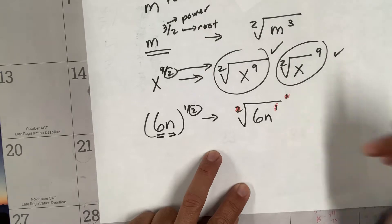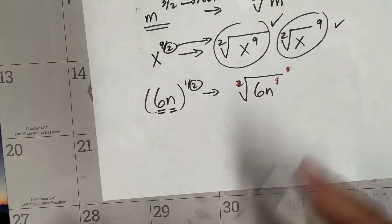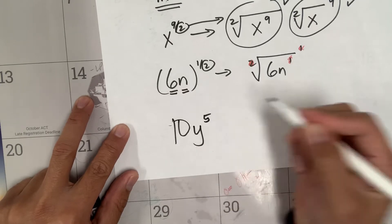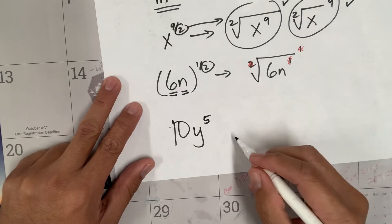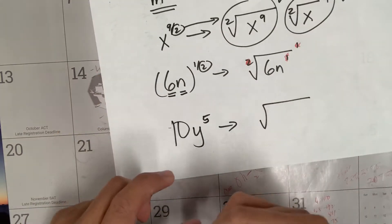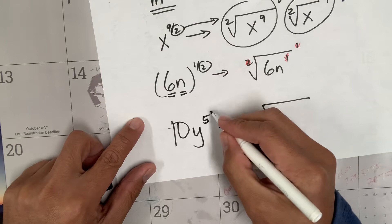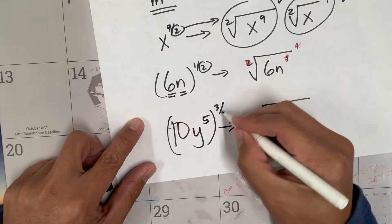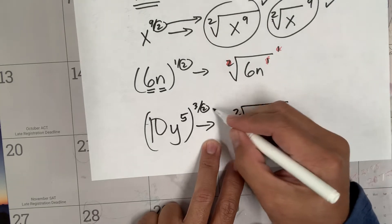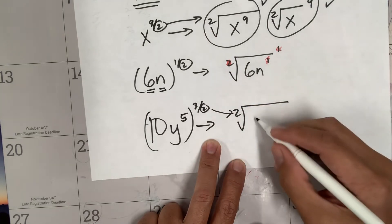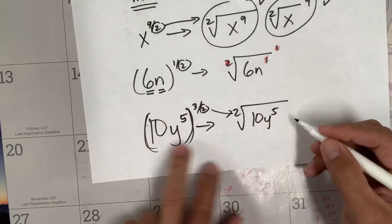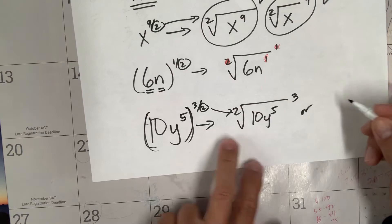One more. Then (10y)^(5/2) - I forgot something - this has to be parenthesis to the three-halves. So here you put the two here because of the root there, or that's invisible you don't have to. 10y to the fifth inside because that's the one inside the parenthesis.